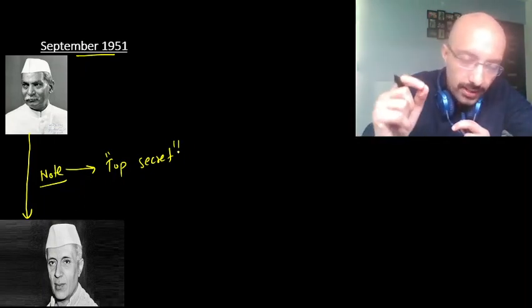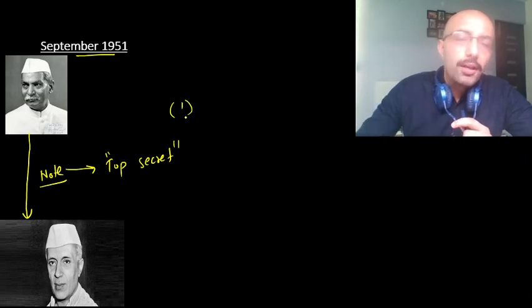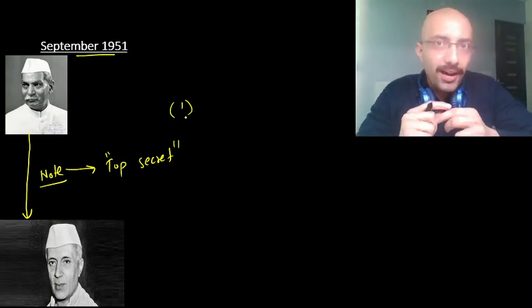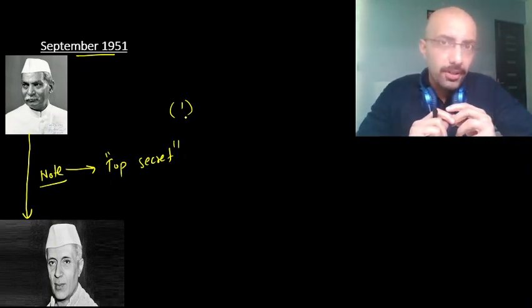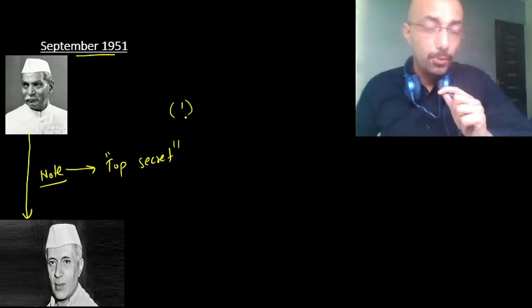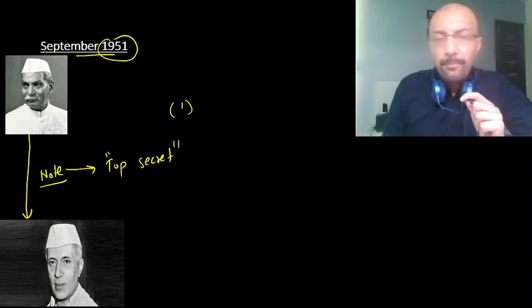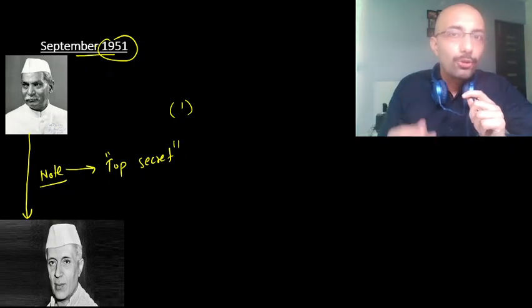In this note, Rajendra Prasad said: when a bill is passed by Parliament, I will act according to the directions of my conscience. That means when a bill is passed — at that time by the interim Parliament, since the first elected Parliament would come into being in May 1952 — he indicated he would assent or not assent according to his own conscience, not necessarily on ministerial advice.